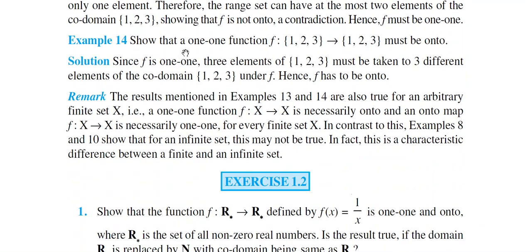Next, Example 14: Show that a one-one function f: {1,2,3}→{1,2,3} must be onto. This is the reverse of the previous question. Given that the function is one-one, prove it is onto. Since f is a function, no domain element can be unrelated. And since it is one-one, the three elements of {1,2,3} must map to three different elements of the co-domain {1,2,3}.